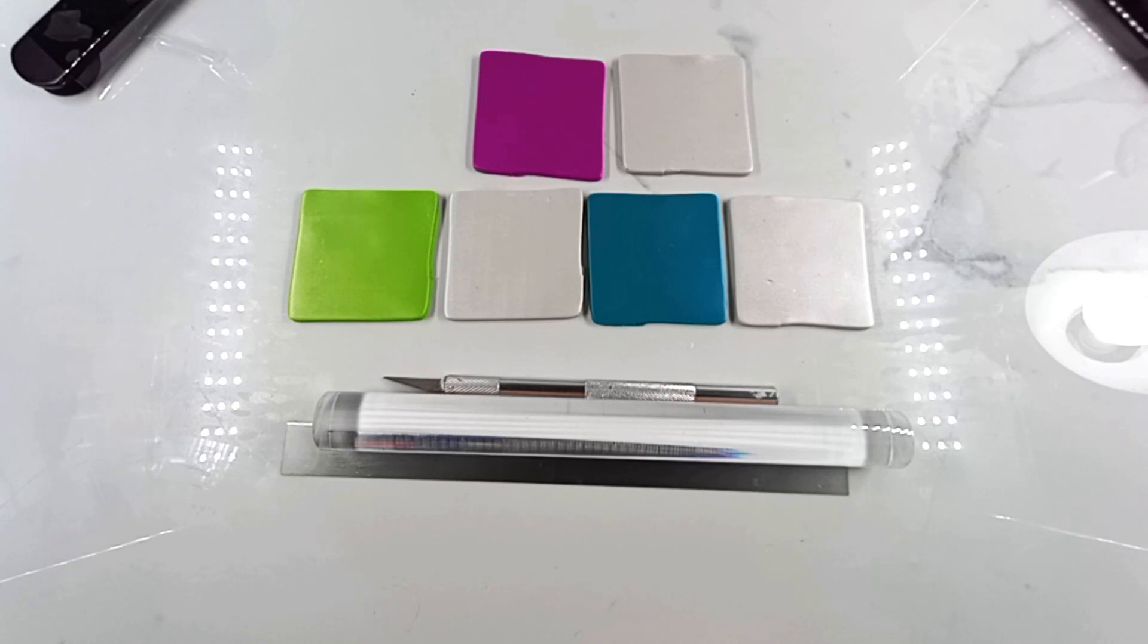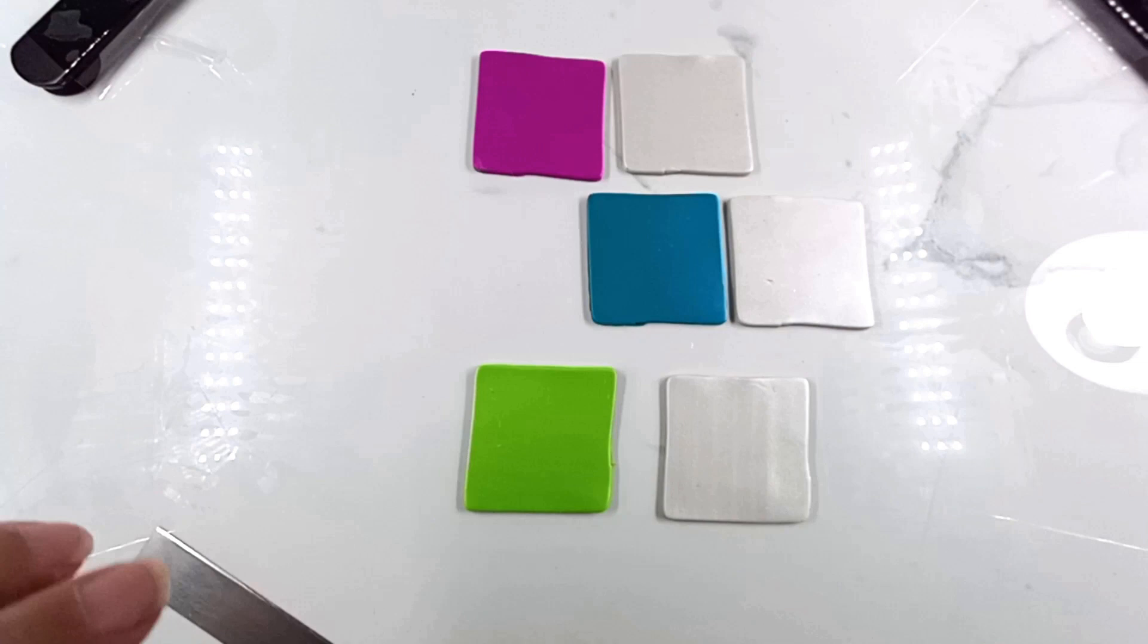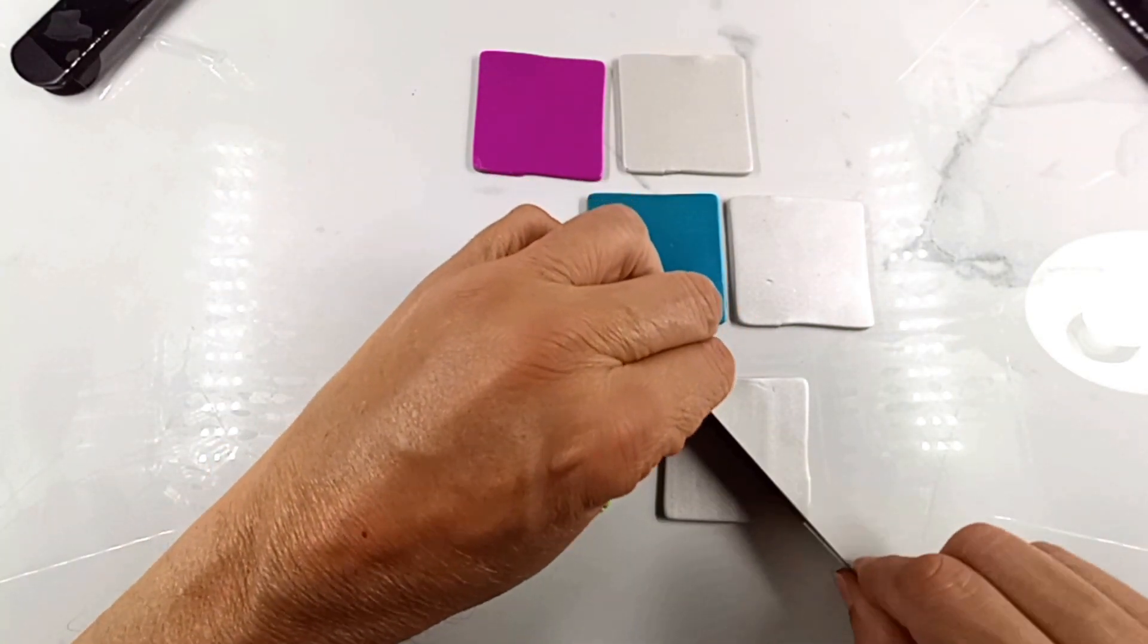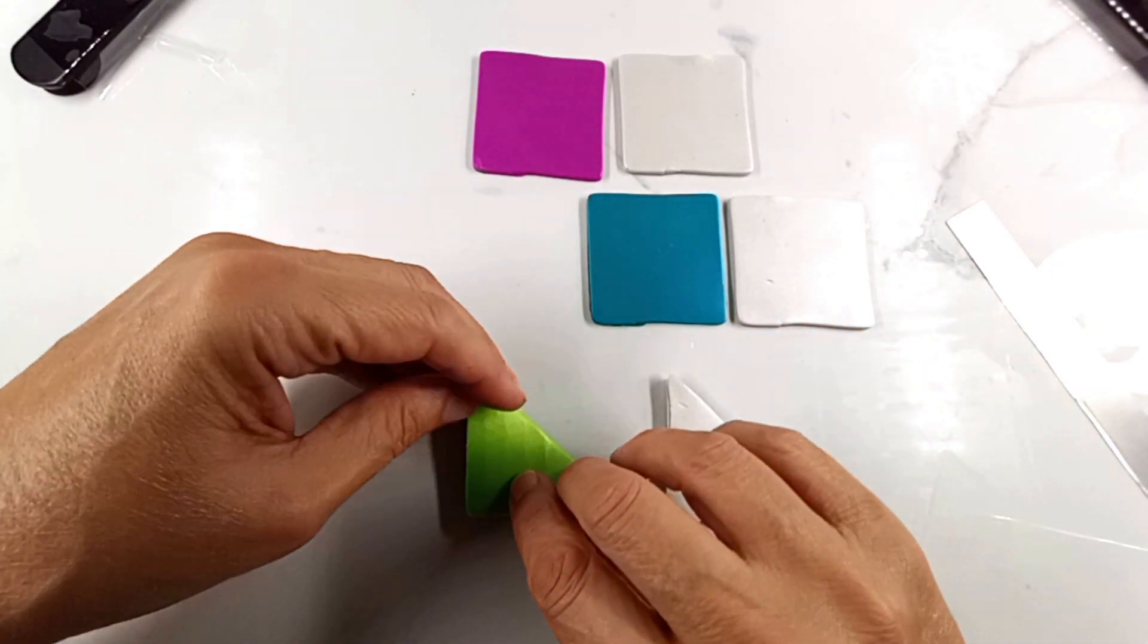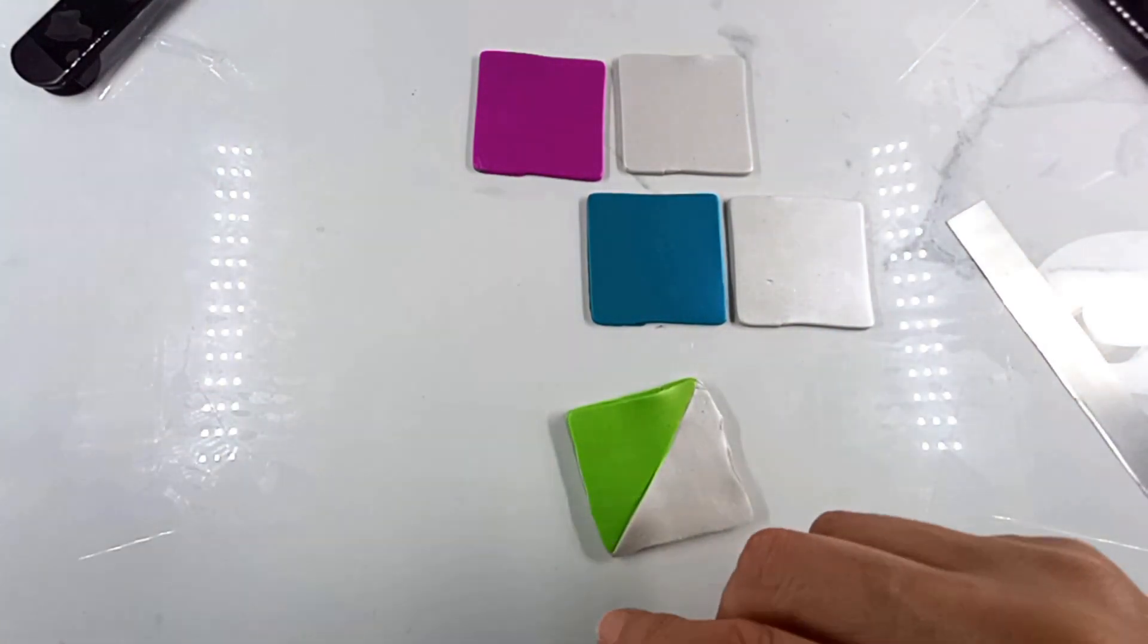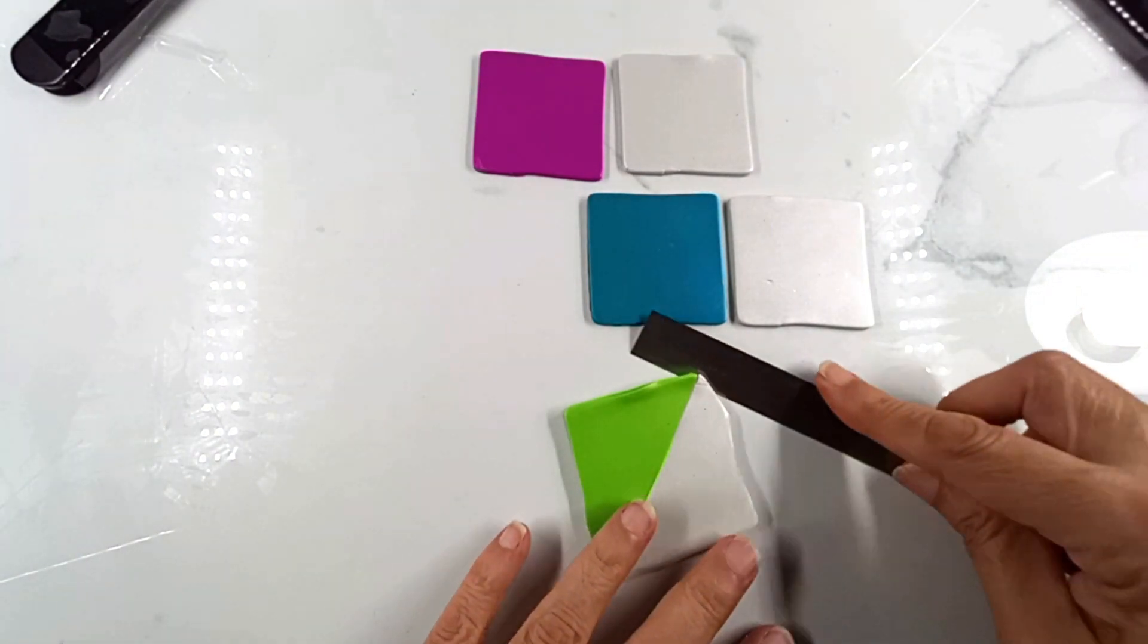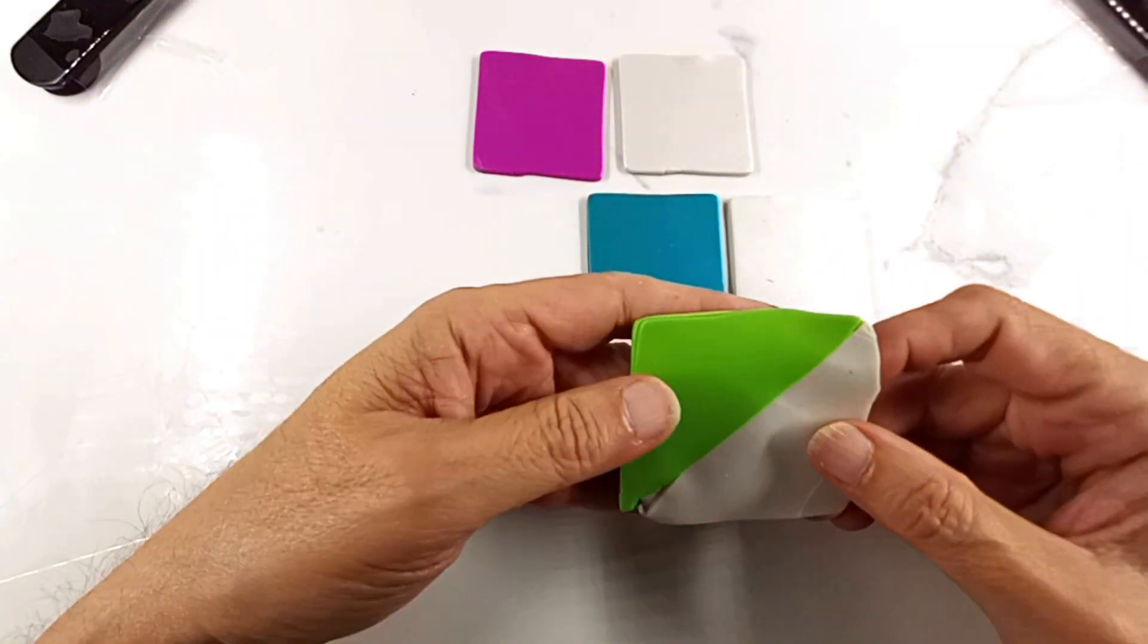And what I want to do is some Skinner blends with the three colors. So we're going to take these, cut them diagonally, place them on top of each other, and roll them just to get them connected. And then we're going to run them through our pasta machine and make a Skinner blend. We're going to put it through this way and back again.